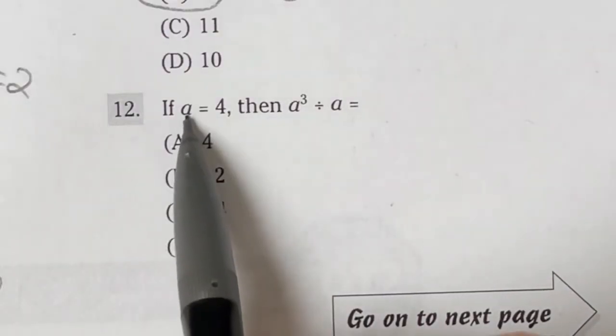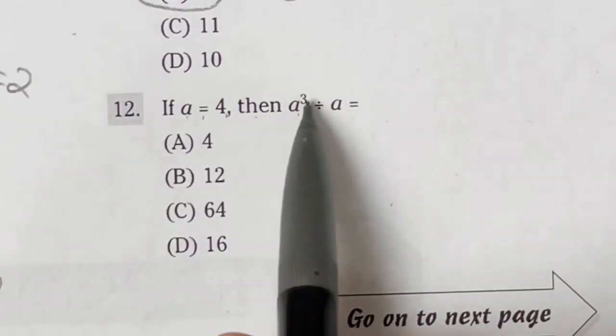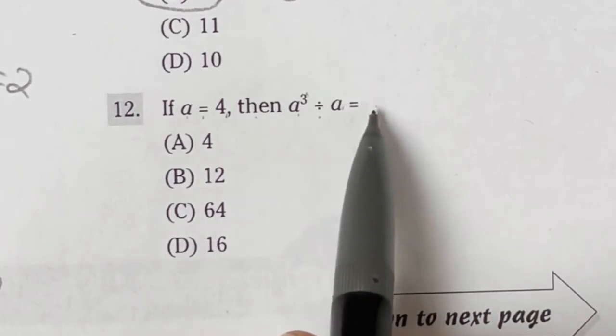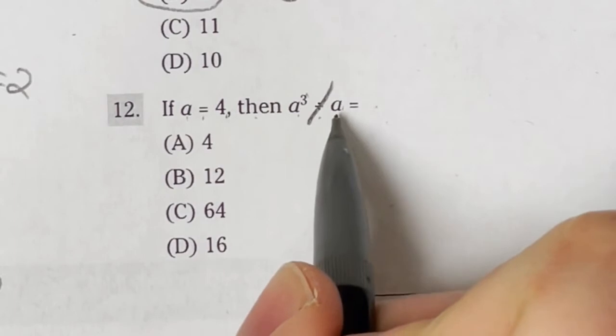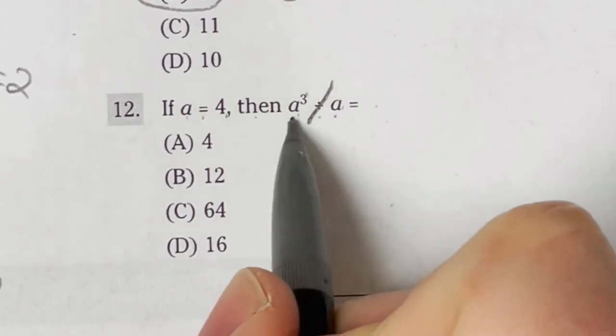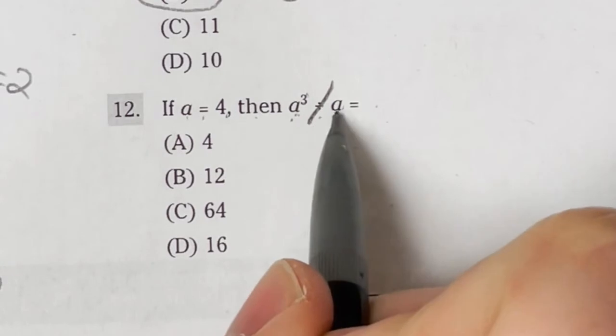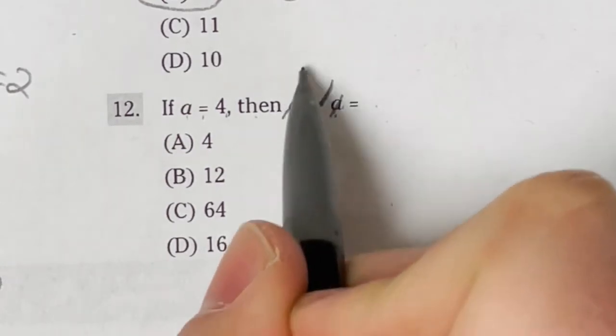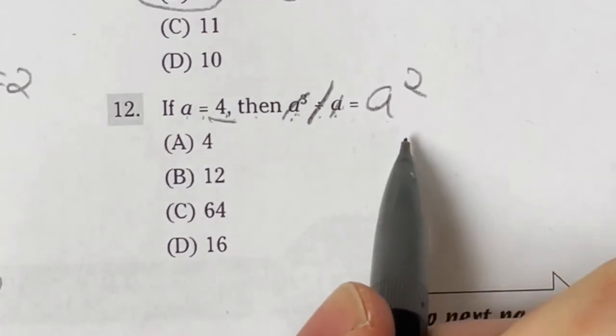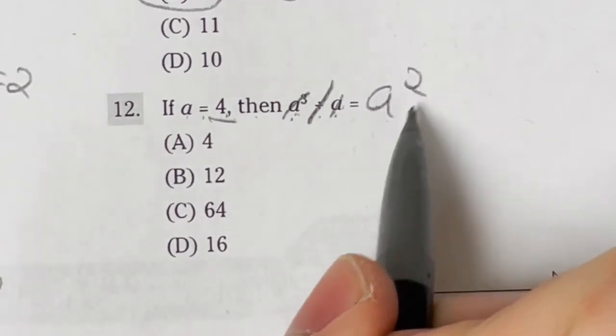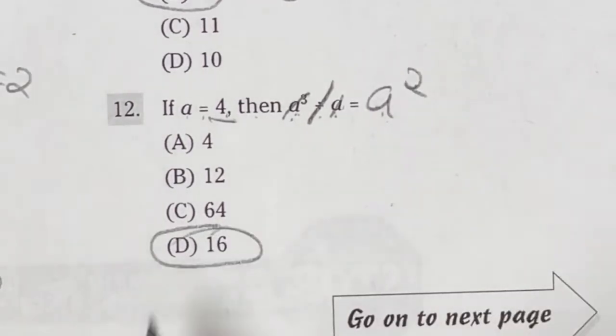For number 12 on the ASVAB, it says if A is equal to 4, then A cubed divided by A is equal to what? So here's the deal. If we're dividing by A, that means essentially we're able to cancel out one of these A's with one of the ones on top. So A to the third minus that one we're canceling out is now just going to give us A squared. And if we're plugging in 4, this is really just asking you what is 4 squared? Well, 4 times 4 gives me 16. Answer D.